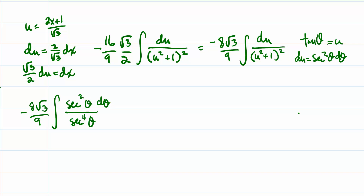The numerator is the du, swapped out with sec² θ dθ as seen above. We simplify sec² θ over sec⁴ θ to just dθ over sec² θ, and 1 over sec² θ is really just cos² θ.